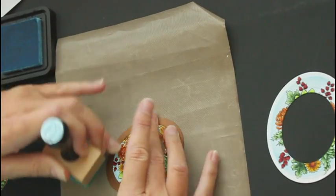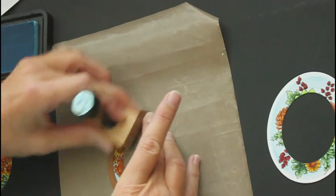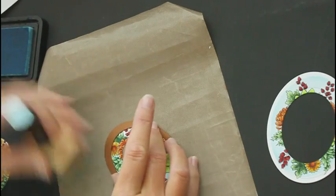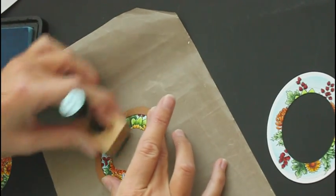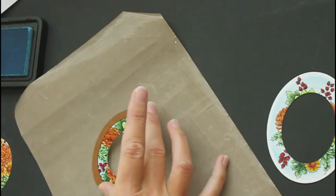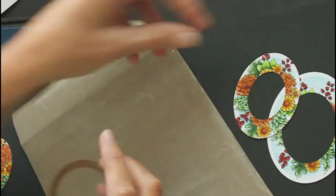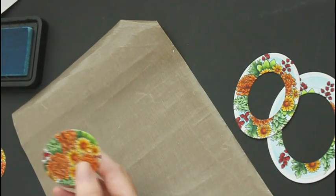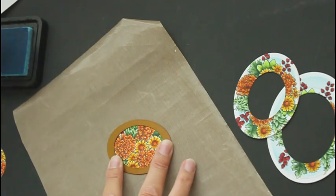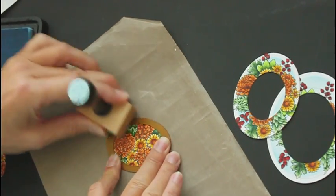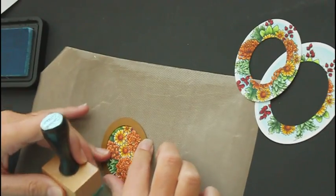This will help distinguish the layers a little bit better too, because the part that I'm not sponging, the outer part, will act, the white, act as an extra border. So I have my second one. I love to sponge my images after I have cut them with nestability dies.